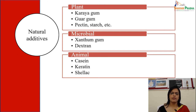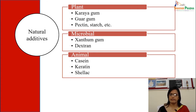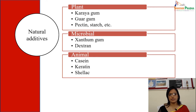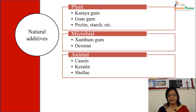Natural additives from plant sources include caraya gum, guar gum, pectin, and starch. Microbial natural additives include xanthan gum and dextran. From animal sources: casein, carotene, and shellac.